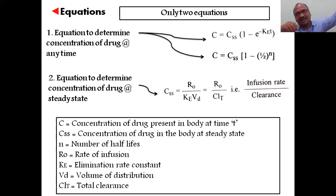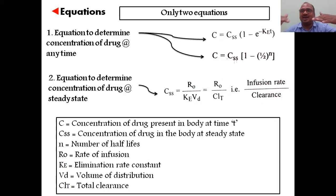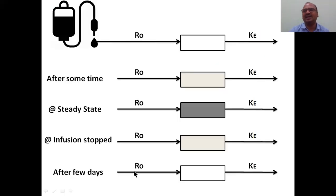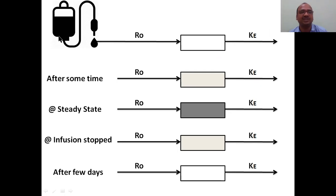Steady state means rate of infusion equals rate of elimination — one drop enters, one drop exits, constantly maintained. The variables are: C = concentration of drug in the body, Css = steady-state concentration, n = number of half-lives, R₀ = rate of infusion, ke = elimination rate constant, Vd = volume of distribution, and clearance.